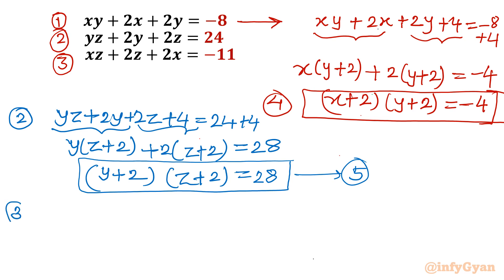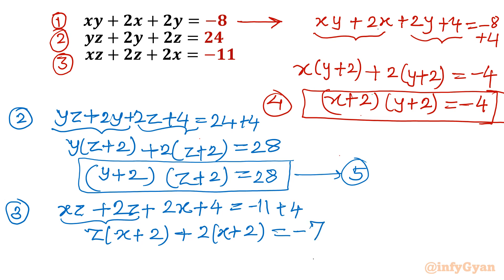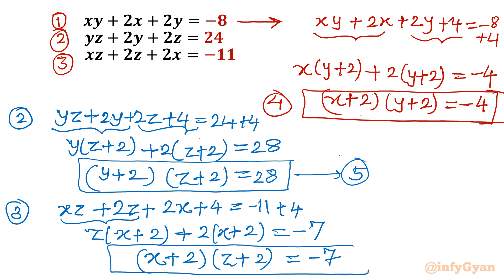Now let us consider equation number 3 and add 4 to both sides: xz plus 2z plus 2x plus 4, and the right-hand side is negative 11 plus 4. From the first two terms z is common, giving z(x plus 2), and from the last two terms 2 is common, leaving (x plus 2). So (x plus 2)(z plus 2) equal to negative 7. This is equation number 6.